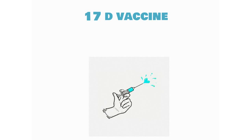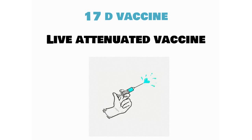There is a vaccine to prevent yellow fever virus infection and that vaccine is called the 17D vaccine. It is a live attenuated vaccine.